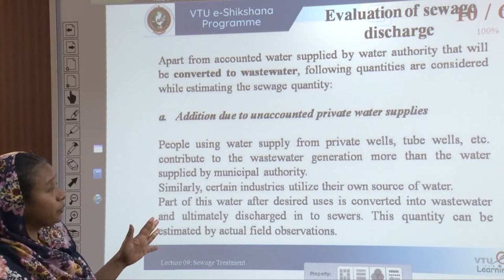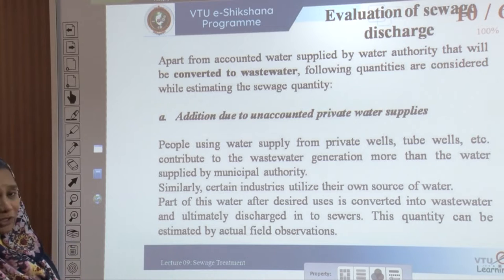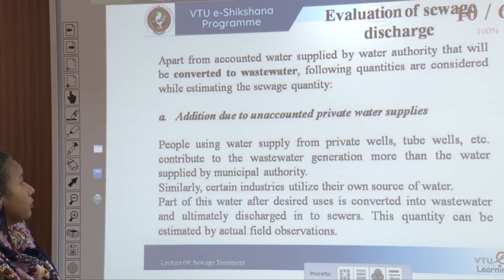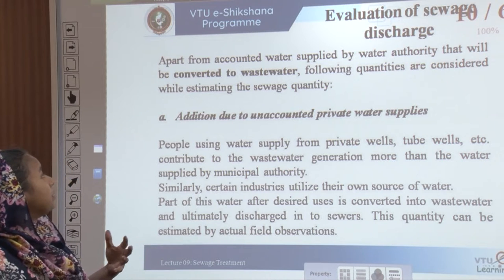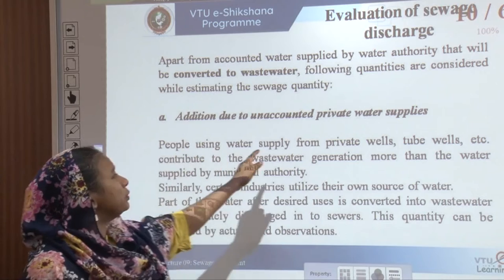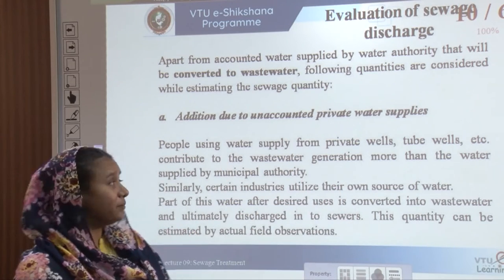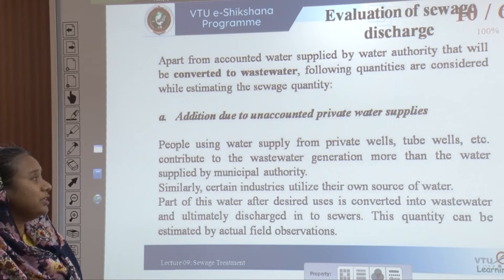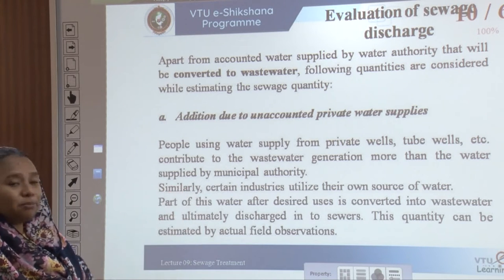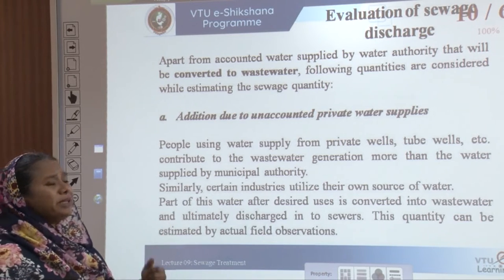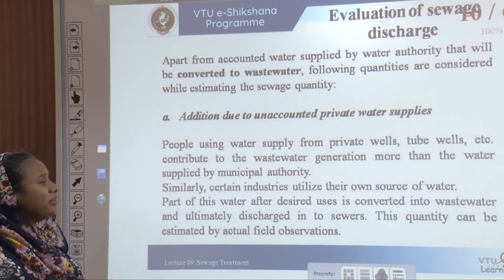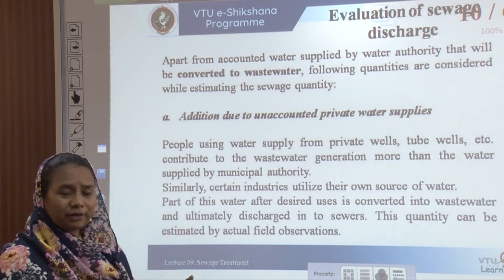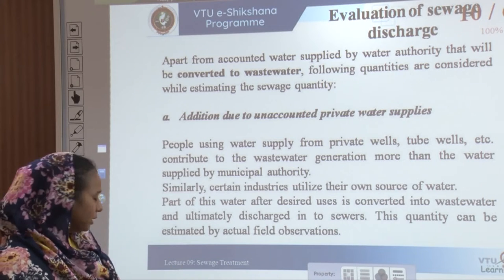Apart from water supplied by the water authority, there is additional wastewater to be quantified and estimated. One addition comes from unaccounted private water supplies — people using private wells or tube wells contribute to wastewater generation beyond what the municipal authority supplies. Many industries also have their own water sources, and part of that water is converted into wastewater and discharged into the sewer. This quantity must be observed and estimated by actual field observations.